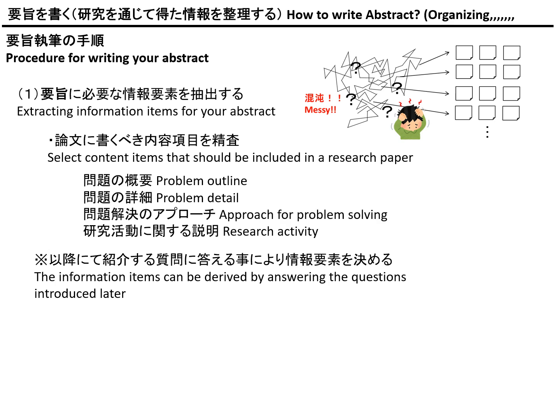This work is almost equivalent to selecting content items that should be included in your research paper. These content items — probably information essences — could be categorized into four parts. The first part is problem outline.